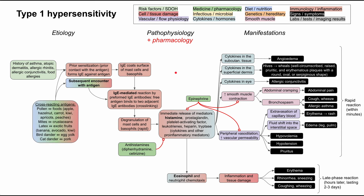A quick note on cross-reacting antigens between environmental and food sources: pollen cross-reacts with many foods like apples, hazelnuts, carrots, kiwi, apricot, and peaches. Dust mites can cross-react with crustaceans found in seafood. Latex, like in gloves or condoms, can cross-react with exotic fruits like bananas, avocado, and kiwi. Bird dander cross-reacts with egg yolk, and cat dander cross-reacts with pork. These connections may explain first or subsequent encounters with an antigen.